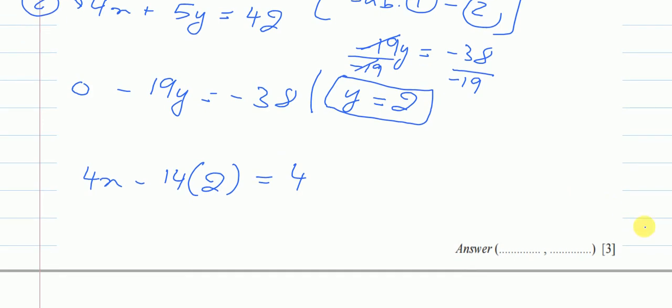Now I will just solve this. I will have 4x minus 14 times 2 is 28, is equals to 4. And then I will have 28 on the right-hand side, it will be a positive. So I will have 4x is equals to 4 plus 28, which is 32.